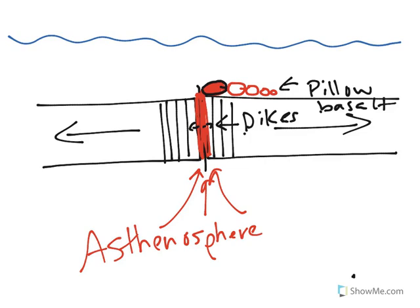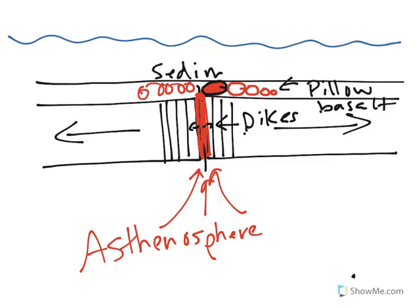There's two more layers. The layer on top is sediment. So let's put a little thing here because we're going to have these pillow basalts all over. So we have sediment that sits on top.